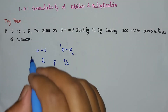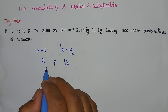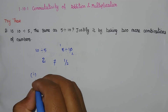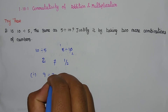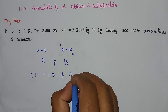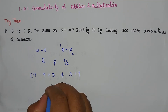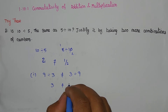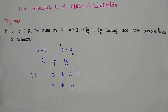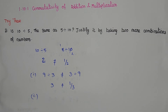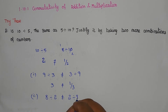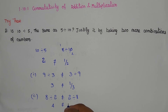First additional combination: 9 divided by 3 is not equal to 3 divided by 9. 9 divided by 3 gives 3, while 3 divided by 9 gives 1 by 3. So this is not commutative. Second combination: 8 divided by 2 is not equal to 2 divided by 8. 8 divided by 2 gives 4, while 2 divided by 8 gives 1 by 4. Both are not the same.